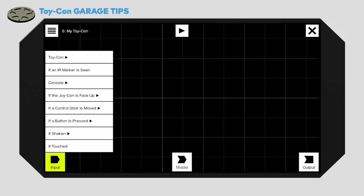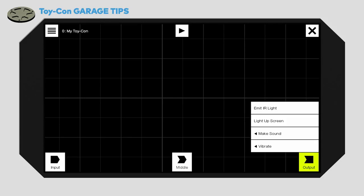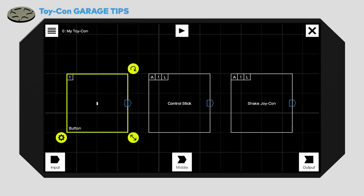Middle nodes let you add elements, such as counters or timers, in between your input and output nodes. Then, use output nodes to make something happen, like lighting up the screen or playing a sound.